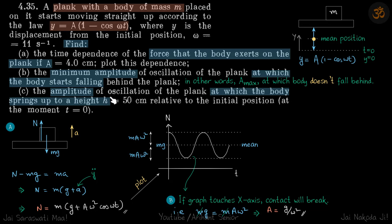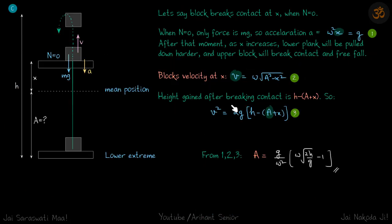For the third part, we find the amplitude at which the body springs to a height h. When it 'springs,' it loses contact, undergoes free fall, and reaches a maximum height h with respect to its initial position. The plank starts at the lower extreme at t = 0 and performs SHM about the mean position.